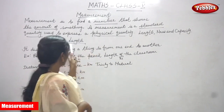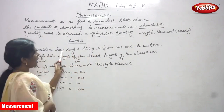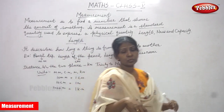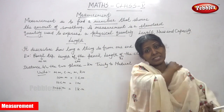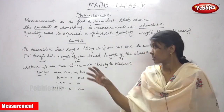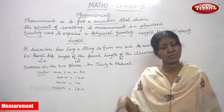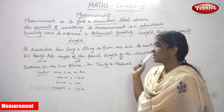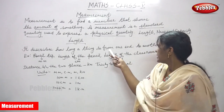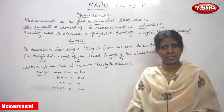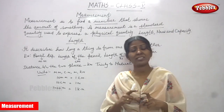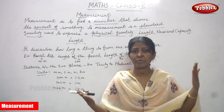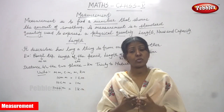Now we are going to see length — the first physical quantity. Length describes how long a thing is from one end to another. Length means a long distance. We measure a long thing or long distance. It measures from one end to another end.